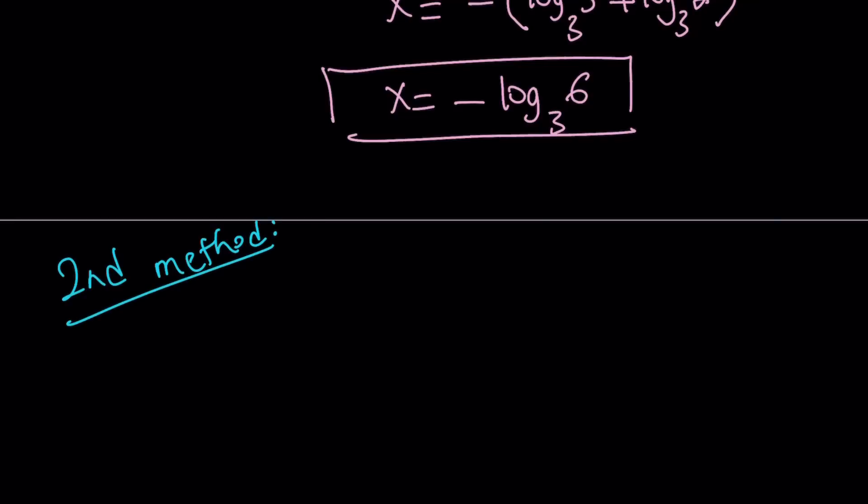For my second method, I'm going to do something different. Instead of separating the twos and threes, I'm just going to ln both sides. When you have exponents, especially when the exponents are variables, you definitely want to ln or log both sides. In this case, I use ln. You can also use log. It doesn't matter.